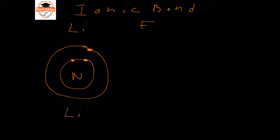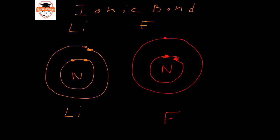Next we look at fluorine. Fluorine has an atomic number of nine, so in its first energy level, just like lithium, it has two electrons. In its second energy level it has seven electrons, and these are the valence electrons that fluorine has.